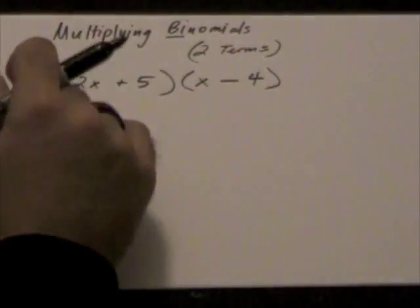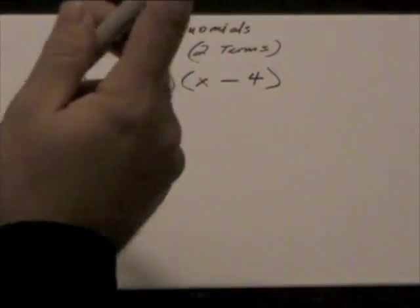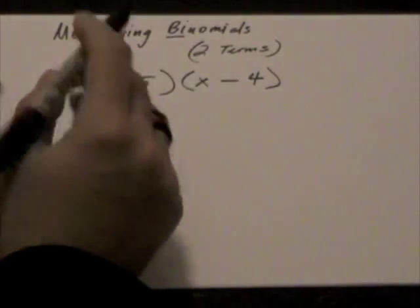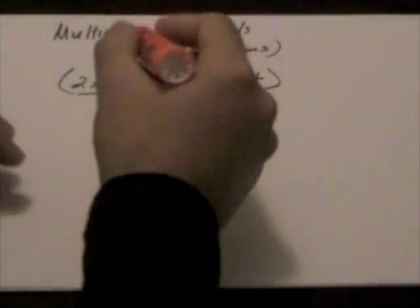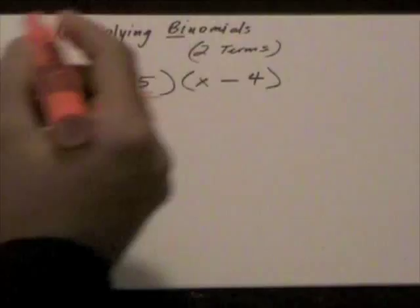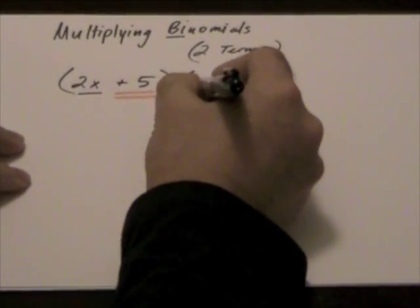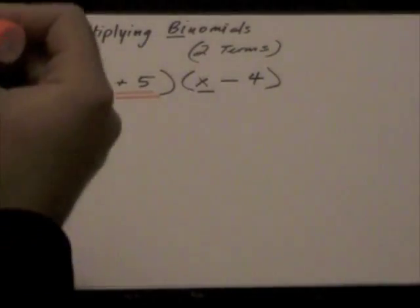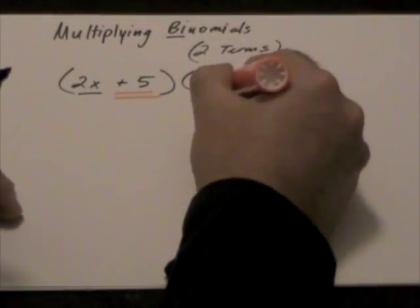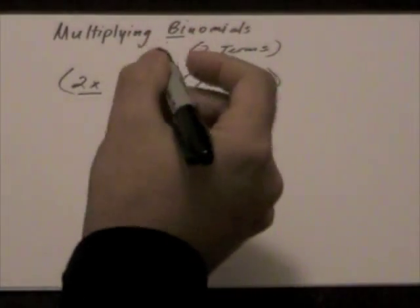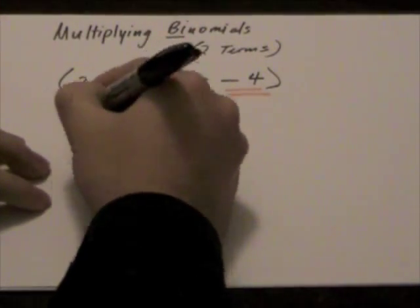Now, here we have two sets of binomials. We have first term, 2x, our second term, plus 5. In our next bracket, we have x followed by negative 4. So, in terms of whenever we're multiplying binomials, we do something called FOIL.